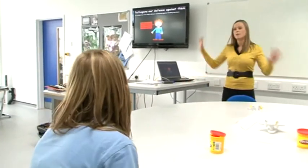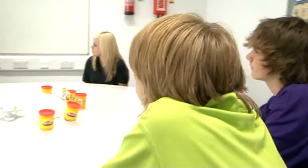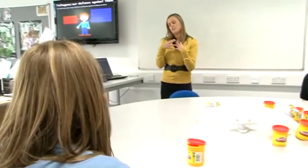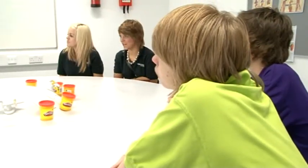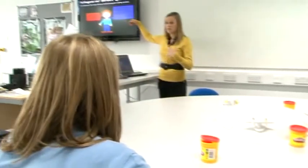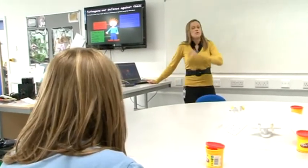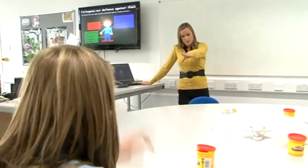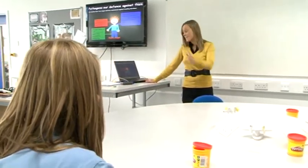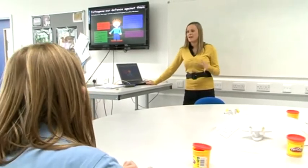Pathogens and our defences against them — first, the general body defences. What is a constant barrier? The skin. What is caught in the breathing system organs? Mucus — excellent. Mucus traps pathogens. If we cut our skin, what will cause a clot and therefore prevent anything entering? Platelets — brilliant.